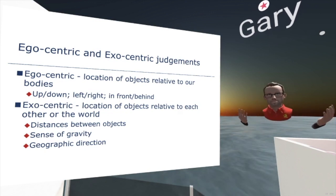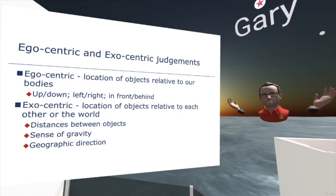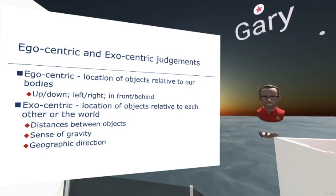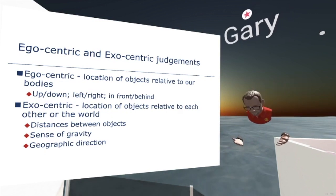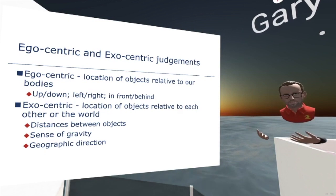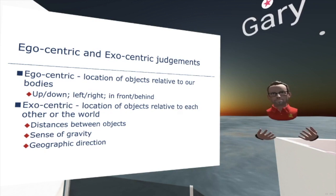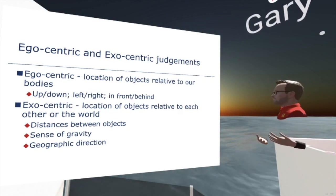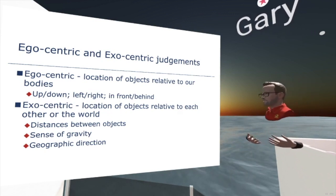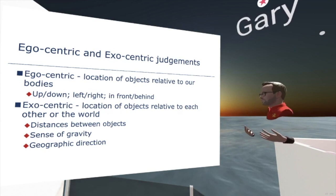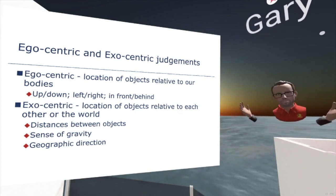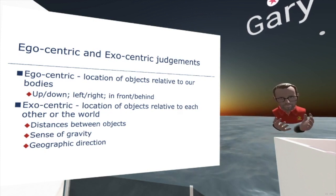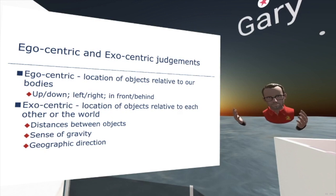In the real world, our eyes afford a certain field of view — roughly about 180 degrees in the horizontal plane and about 120 degrees or so in the vertical plane. Your technology needs to work towards those sorts of values to provide the best sense of space for an individual. In terms of exocentric perception, we're thinking about the location of objects relative to each other or to the wider world, and how we understand perspective there is important.